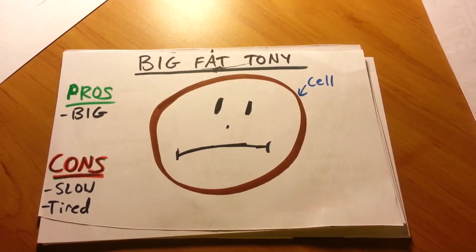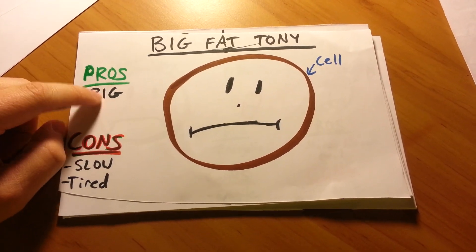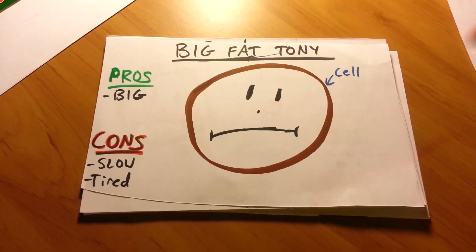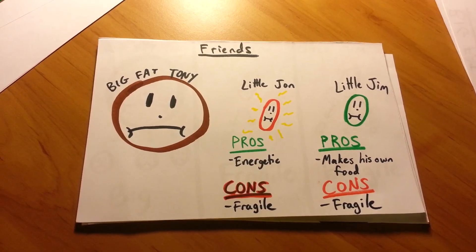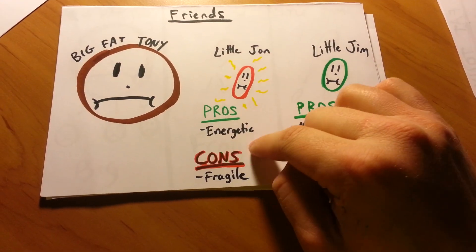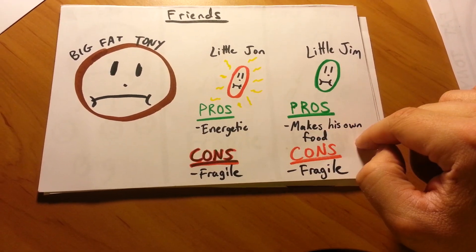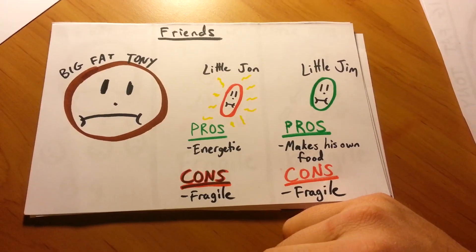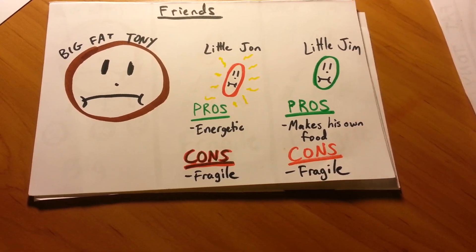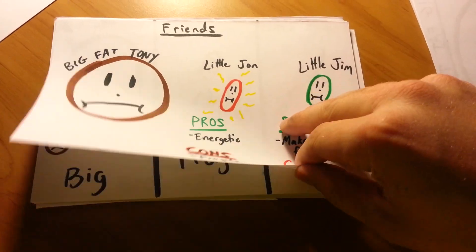Now what does it actually mean? Here I have an example. This is Big Fat Tony — he is a big cell. About the only thing he's good at is being big, but his cons are that he's slow and he's tired all the time. He has a couple of friends: Little John and Little Jim. Little John is very good at being energetic — his pros are energy. Little Jim's pros are that he's able to make his own food from the sun. Both of these guys are very small, very weak, and very fragile.